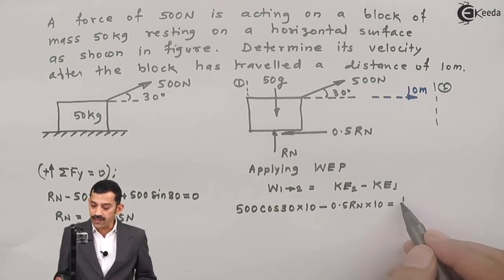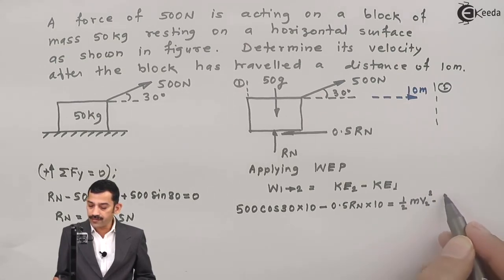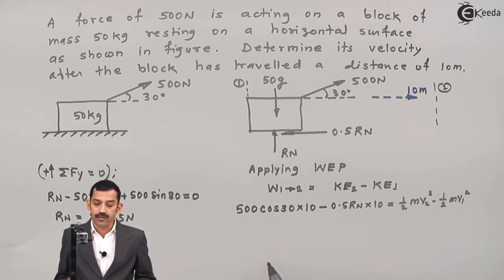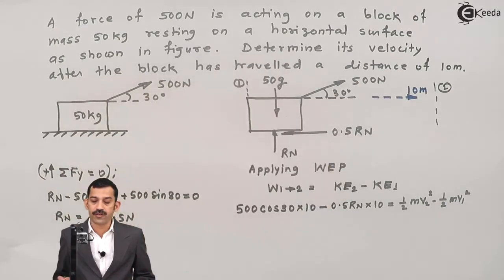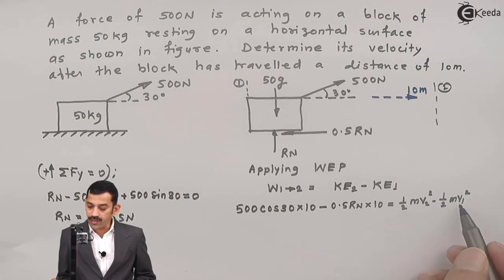Final kinetic energy is half m V2 squared minus initial kinetic energy, half m V1 squared. Now this initial kinetic energy is given in the problem: 50 kg block resting on a horizontal surface. That means V1 is 0. As V1 is 0, we will substitute V1 as 0. Unknown term is only V2.